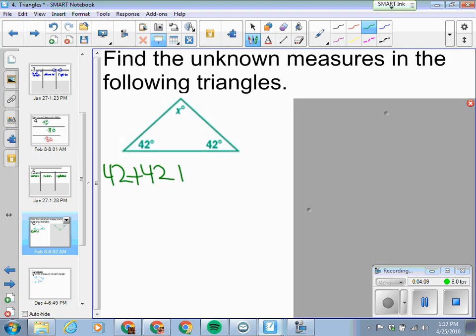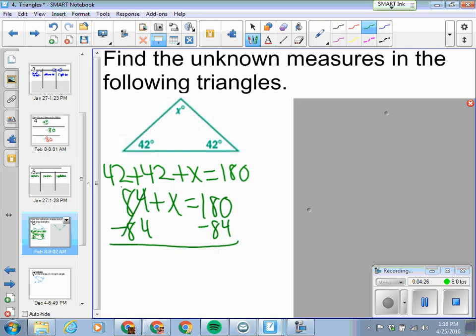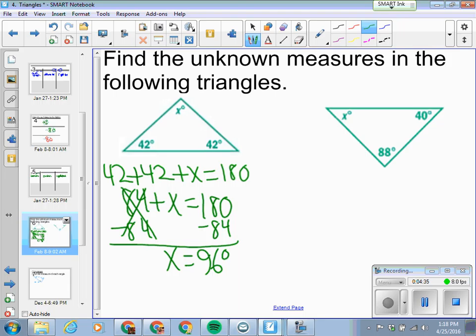Okay, now we're going to find the unknown measures in these triangles. Again, knowing that a triangle is 180 degrees total. So we know we've got one angle of 42 degrees, one angle here is 42 degrees, and the unknown. They all come together to get 180. Combine like terms. 42 and 42 makes 84. We've now worked this down to a one-step equation. Subtract 84 from both sides. That's gone. So we've got 96 degrees left over.